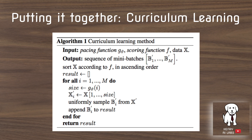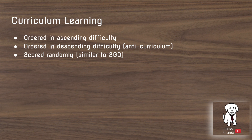Putting it all together forms the curriculum learning algorithm, where instead of randomly sampling, you organize samples by difficulty and increment harder samples according to the pacing function. Another variation is ordering in descending difficulty — the anti-curriculum method. They also show a baseline of random scoring, which is similar to SGD but not quite the same due to the pacing function component.